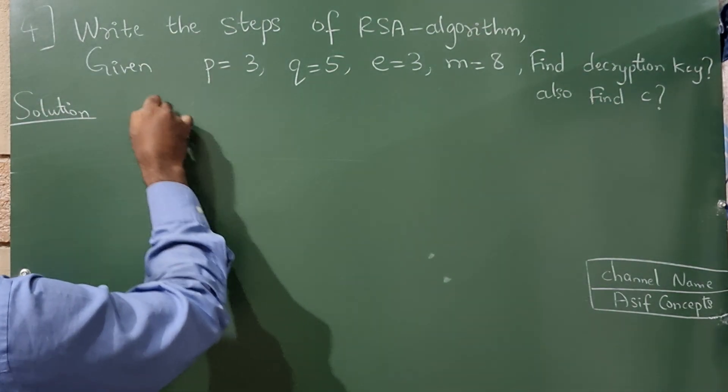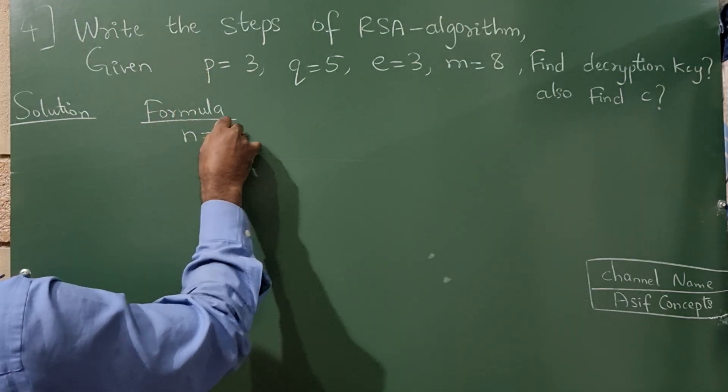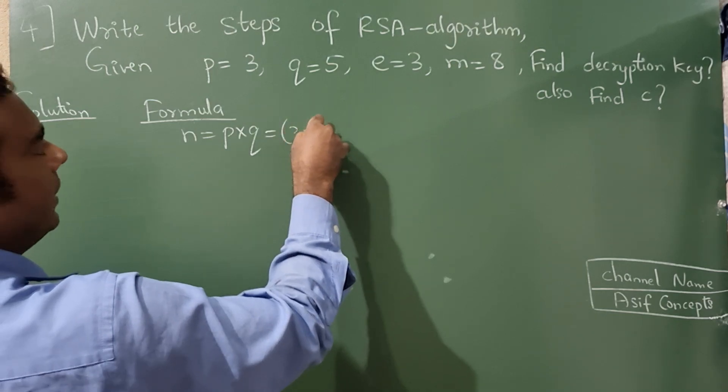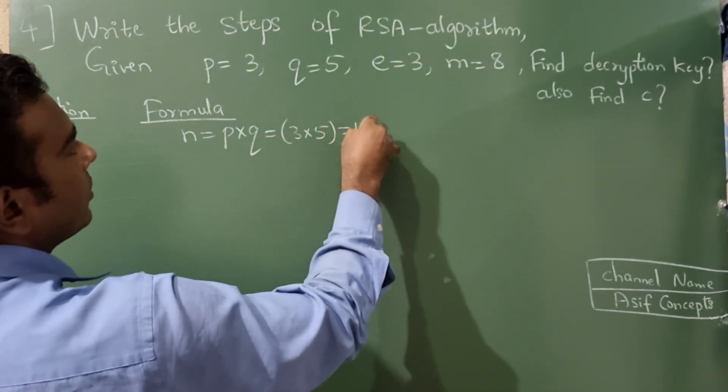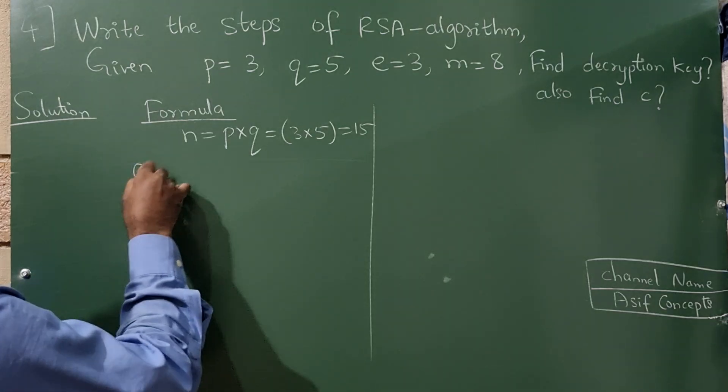Now to solve this there are a few formulas which you need to apply. So N is equal to P into Q. What is P? It is 3, Q is 5, so it is 15. So next is Q(N).